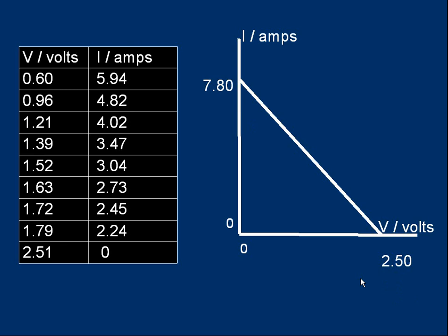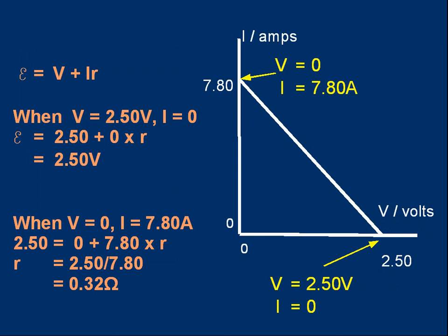What do we do with these results? The top intercept is a point where v equals 0 and i is 7.80 amps. The bottom intercept is a point where v equals 2.50 volts and i equals 0 amps. We've got our basic equation: E is v plus i r. Let's start with the bottom intercept. E equals 2.50 plus 0 times r. That leaves us with E is 2.50 volts. The EMF is 2.50 volts.